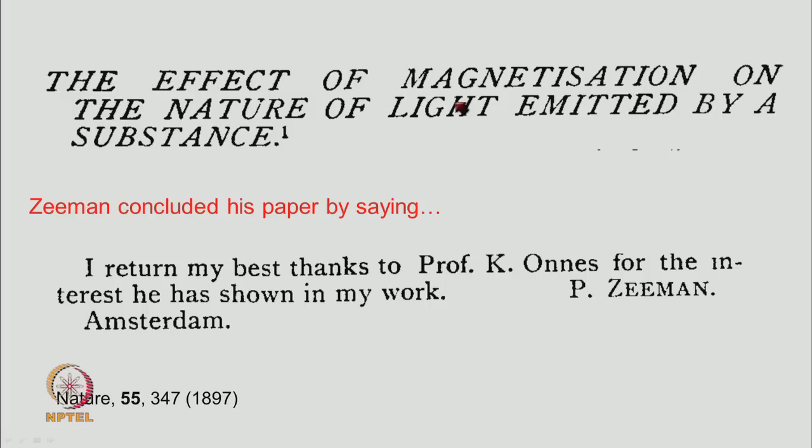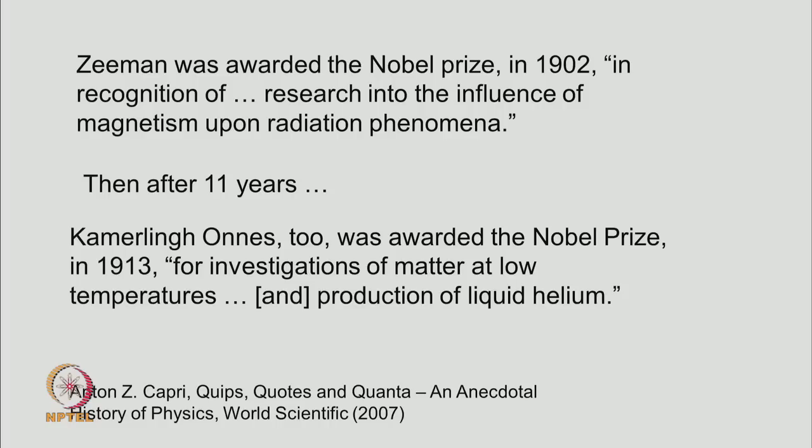The title of the paper was the effect of magnetization on the nature of light emitted by a substance and in the paper he concluded by saying I return my best thanks to Professor K. Owens for the interest he has shown in my work. I leave it to you to figure out if Zeeman was sending a message to his former supervisor. Anyhow, this work was recognized in the form of a Nobel Prize in 1902 for the research into the influence of magnetism upon radiation phenomena. K. Owens was of course, a brilliant scientist in his own right, but he had to wait 11 years before he could get a Nobel Prize for his investigation of matter and low temperatures and production of liquid helium.